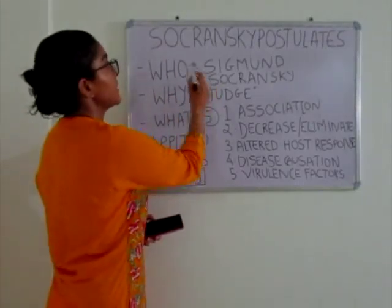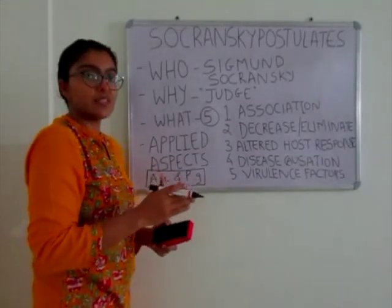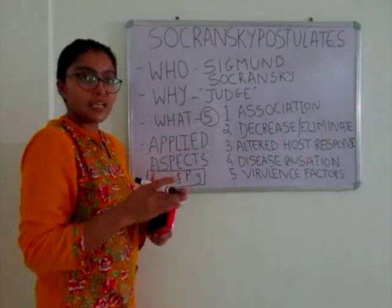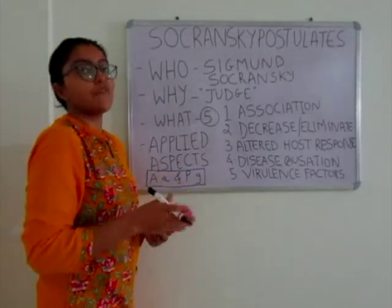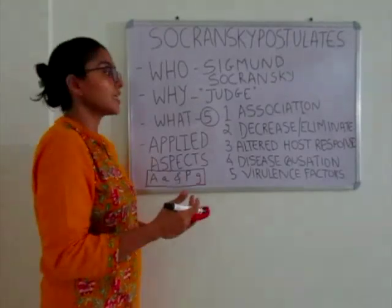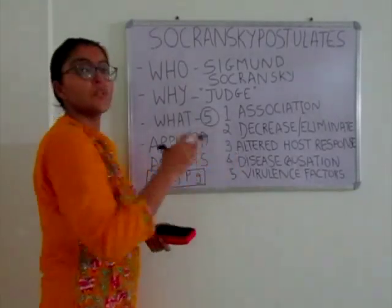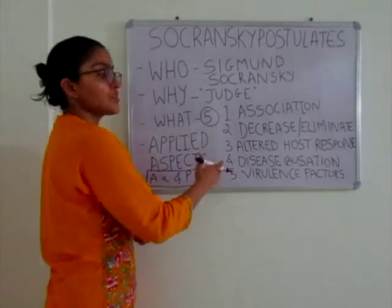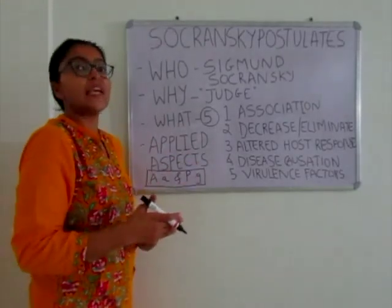Let's have a quick summary. Sigmund Socransky gave Socransky's Postulates to judge whether a microorganism is a potential pathogen causing diseases or infections in humans. There are five postulates: (1) Association — the level of microorganisms must be higher at the site of disease; (2) Decrease or elimination — after therapy, levels must decrease or eliminate; (3) Altered host response — the microorganism must alter immunity; (4) Disease production in experimental animal models; (5) Demonstration of virulence factors — the microorganism must demonstrate factors that mediate tissue destruction and manifest as disease.